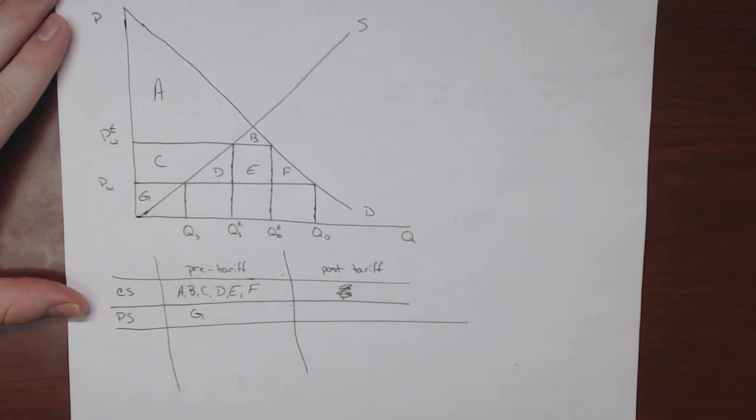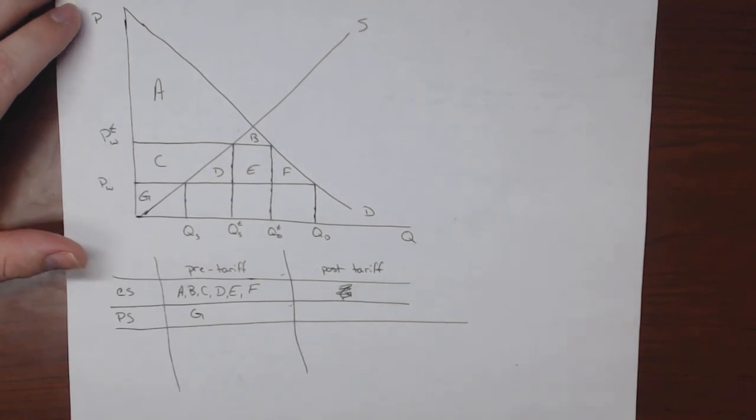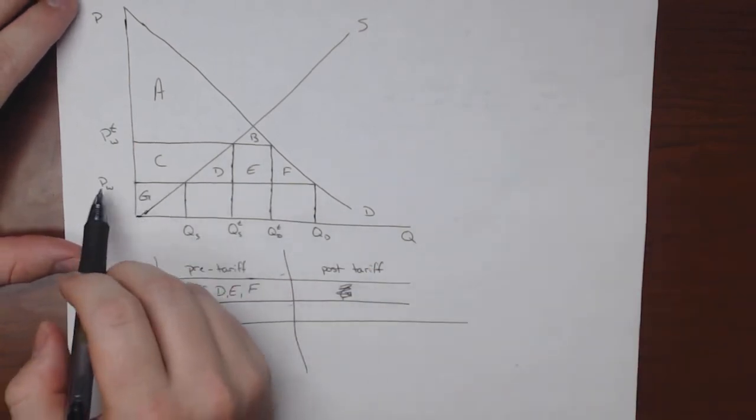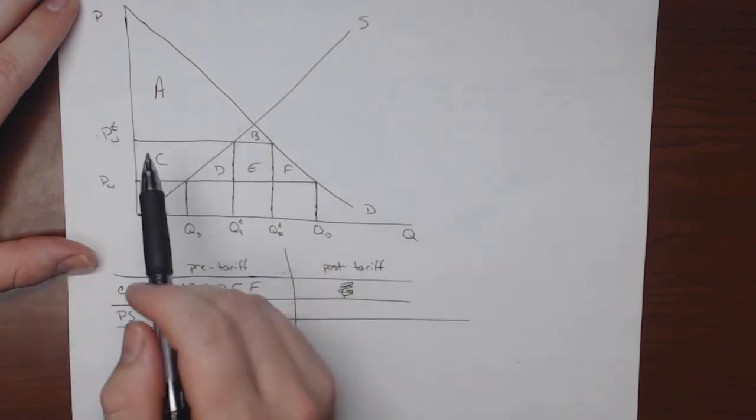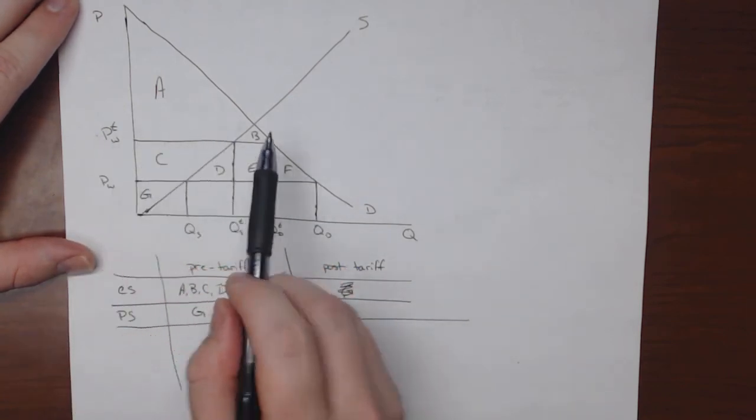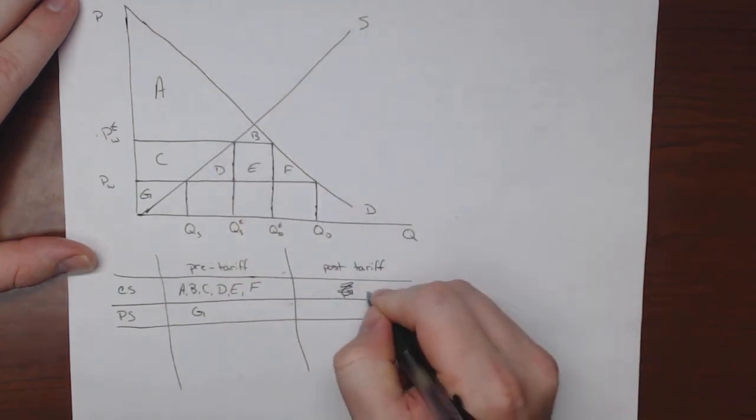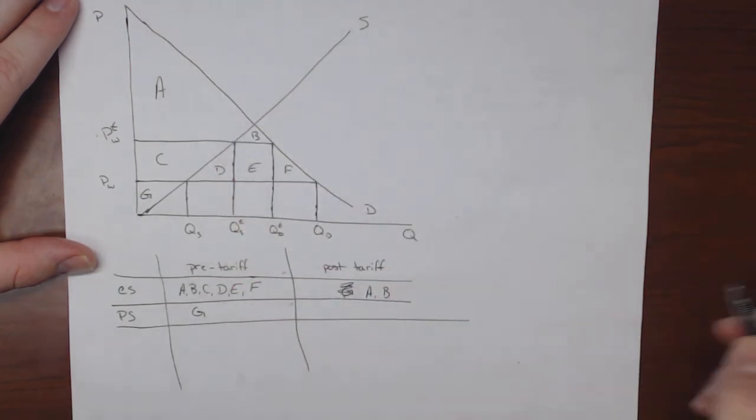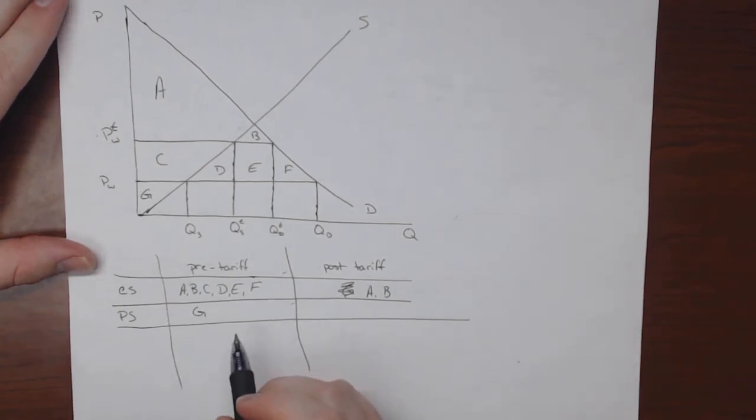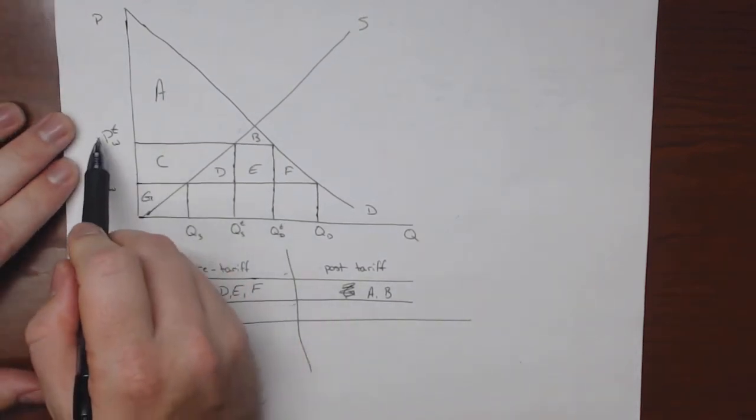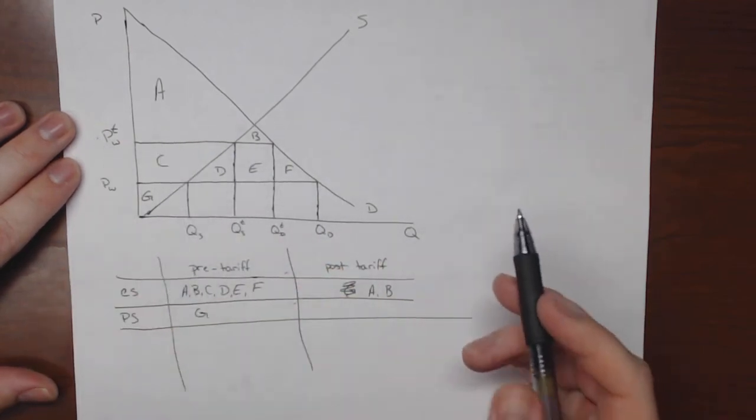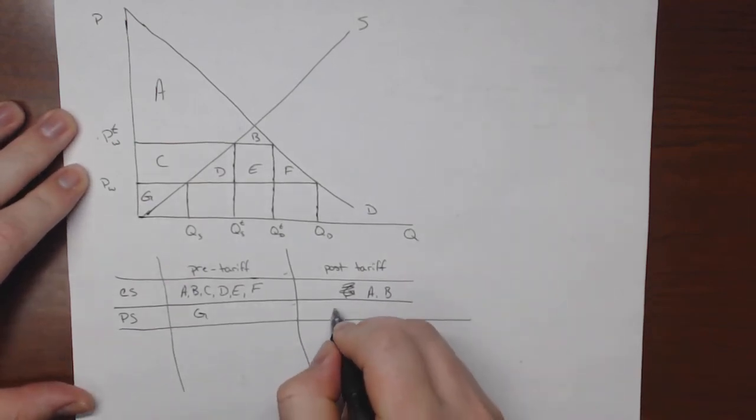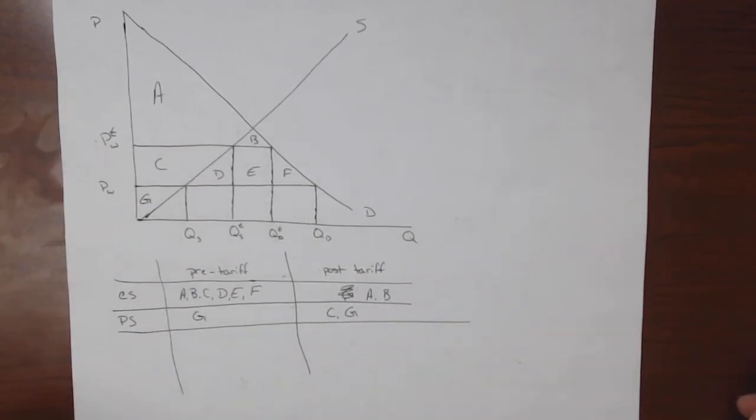Now after the tariff, what happens to consumer surplus? So after the tariff, domestic consumers are paying this price up here, PwT. So we want all the area above this line and below the demand curve. So that'll be A and B. And the domestic producers, well, they're going to be able to charge this price here. And we want all the area below this price and above the supply curve. So that'll be area C and G.